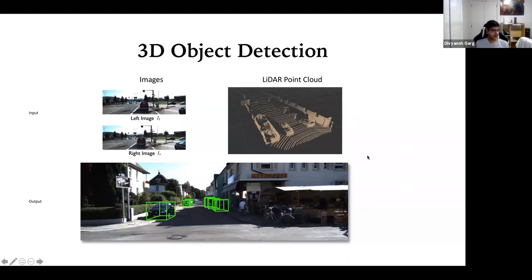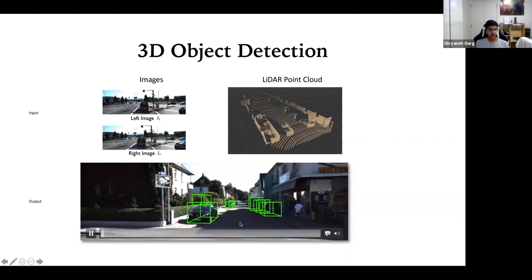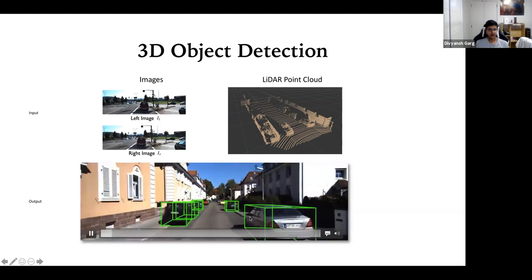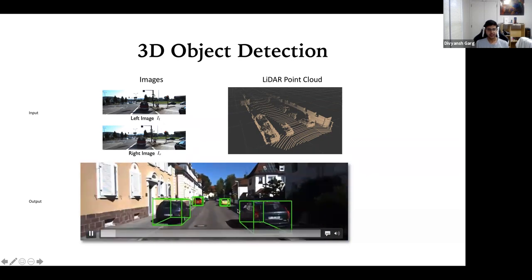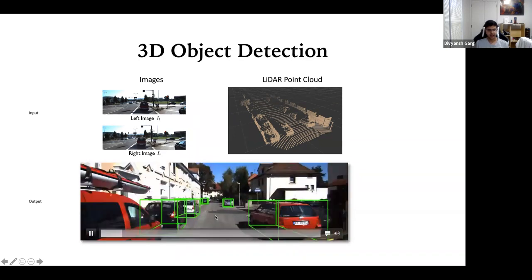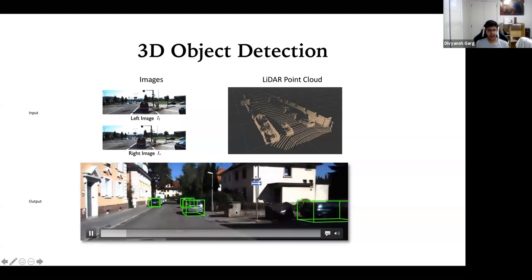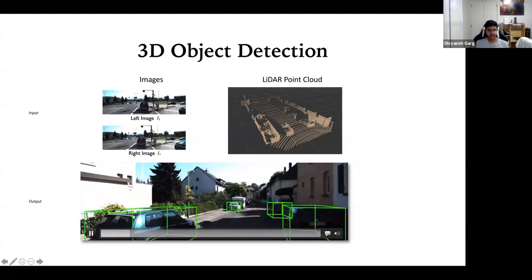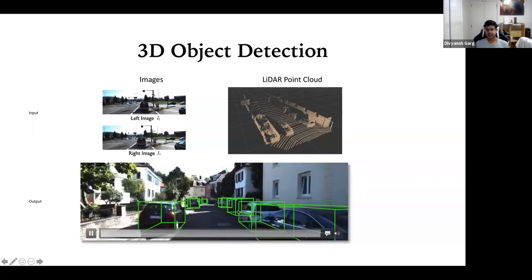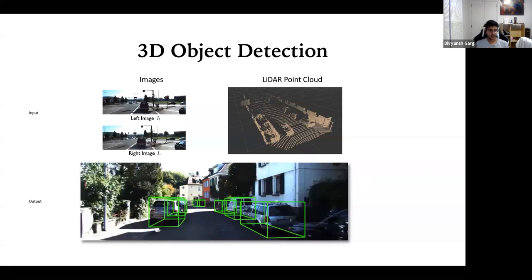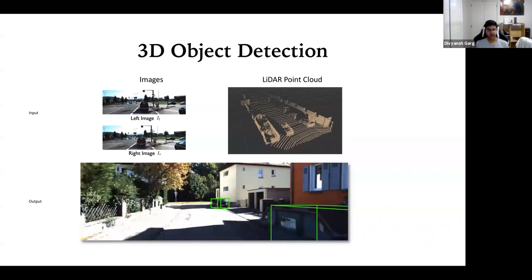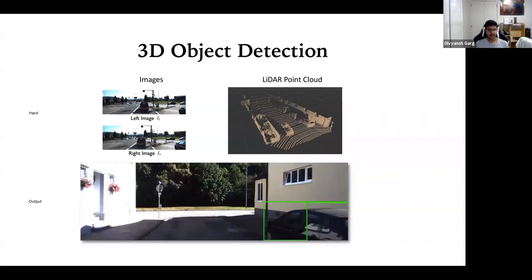This is the view of a self-driving car, and these are all the 3D boxes detected for cars and surroundings. Once it knows a car is here at a certain location with height, width, and depth, it can learn to plan a trajectory to avoid hitting that car. Without this kind of perception, it's hard to navigate properly in such an environment.